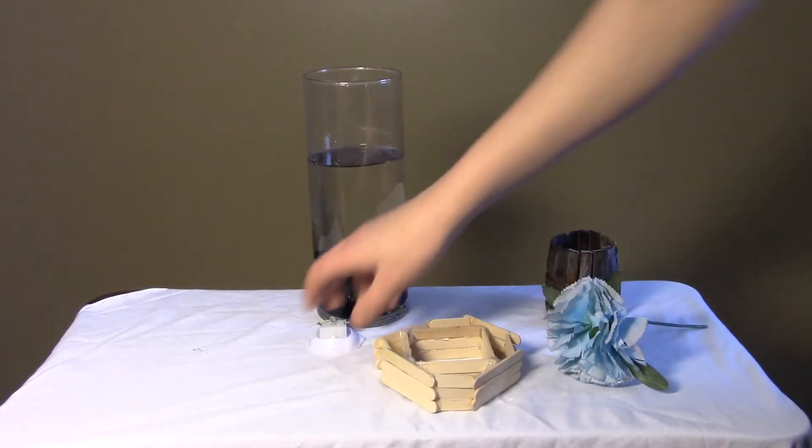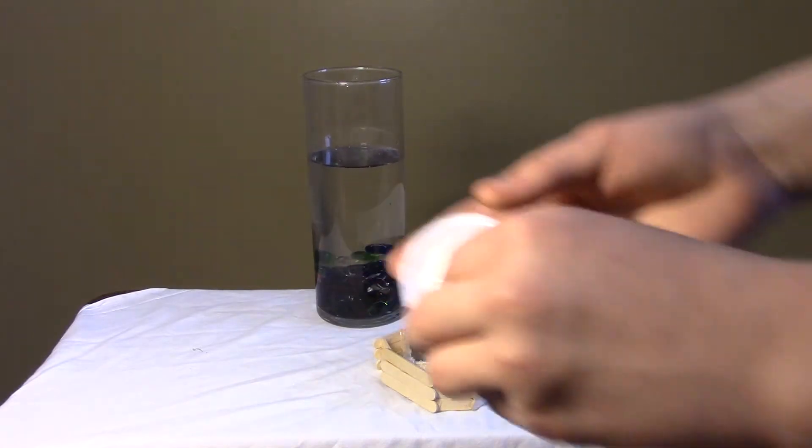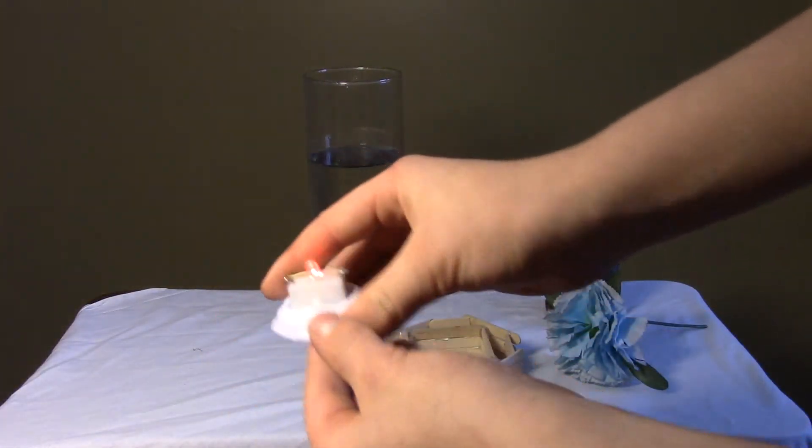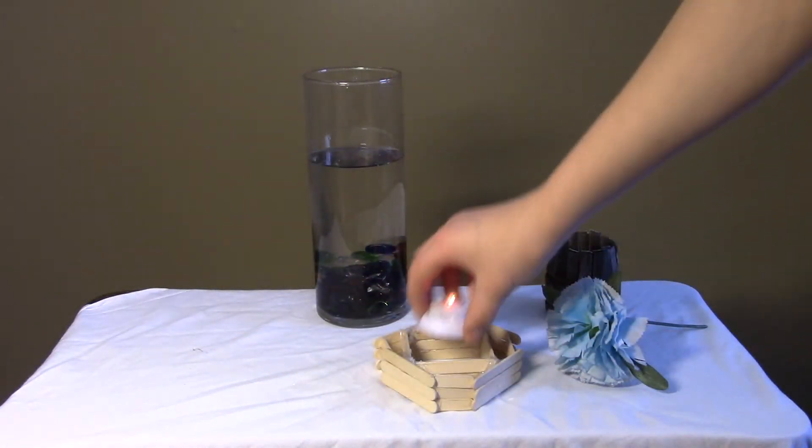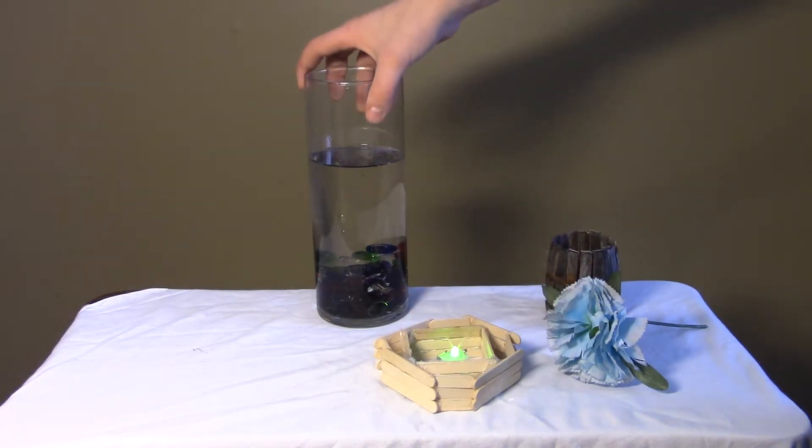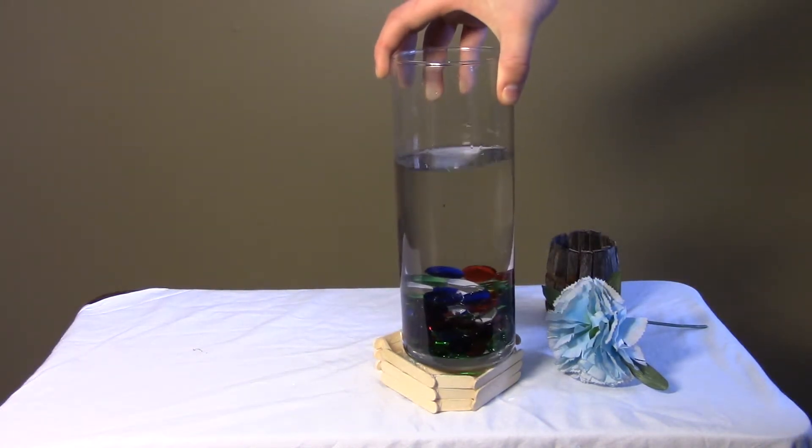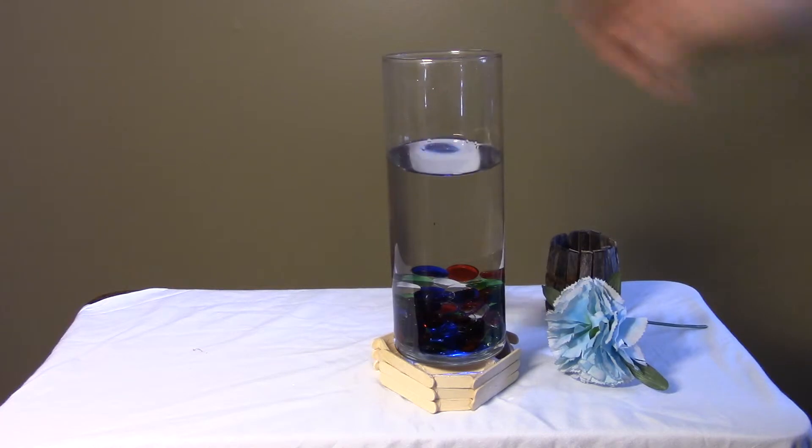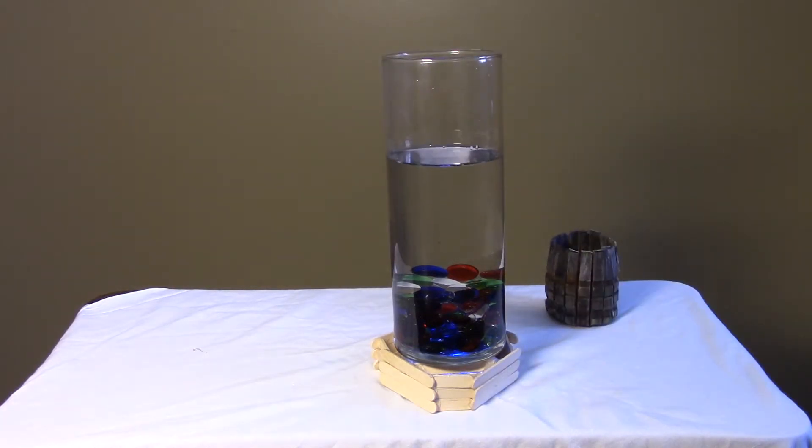Then you'll want to take the stand, turn on the LED light, put it inside the stand, put the stand over the LED light, and then if you want decoration, put the flower inside.